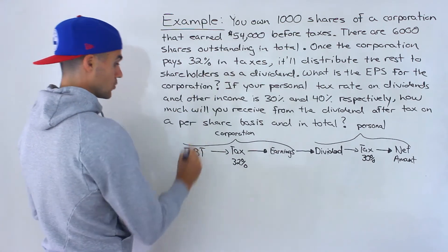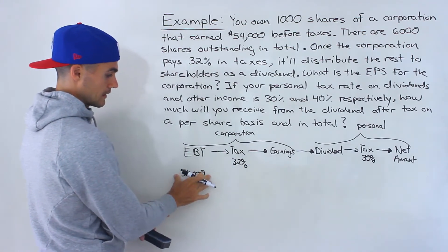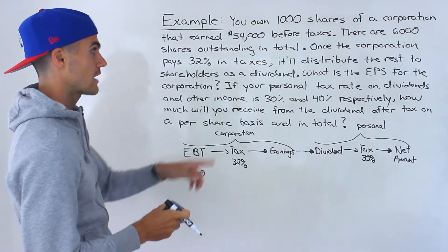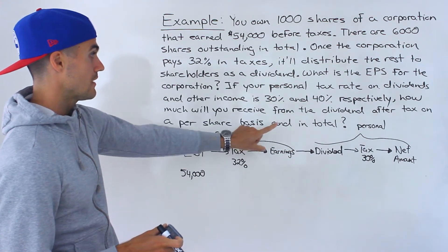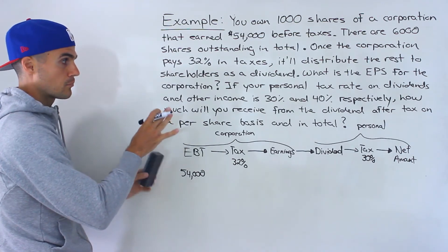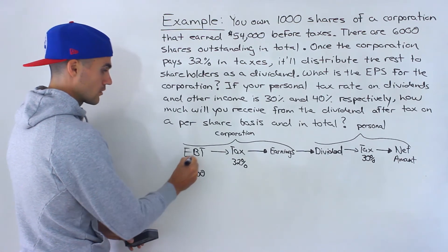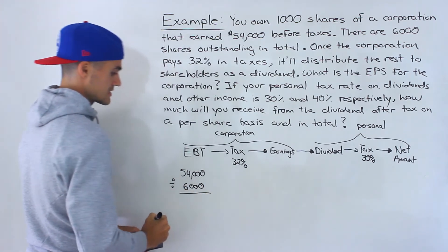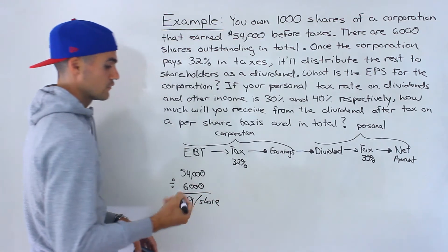So now the calculations. The earnings before taxes we're told is $54,000. I'm going to do this on a per share basis because they're asking for earnings per share and per share dividend amounts. So I'm going to take $54,000 and get the earnings before taxes on a per share basis by dividing by the total shares outstanding — 6,000. So the corporation is earning $9 per share before taxes.